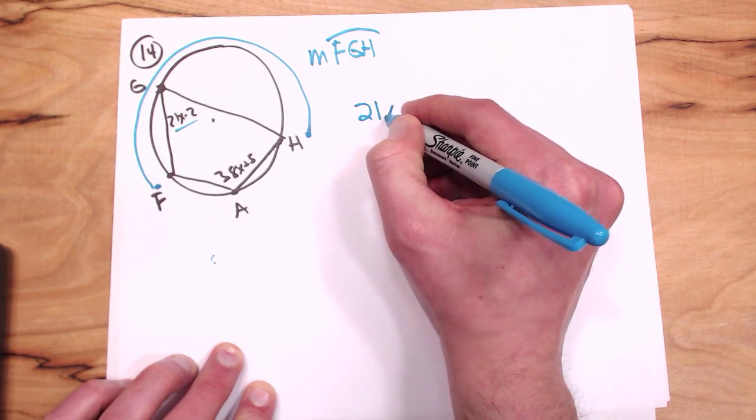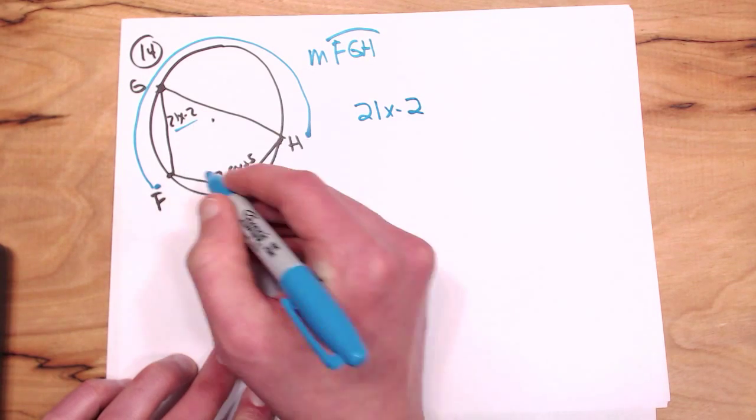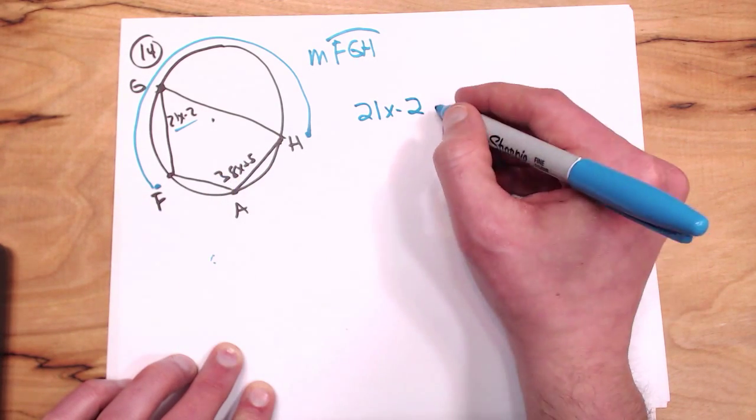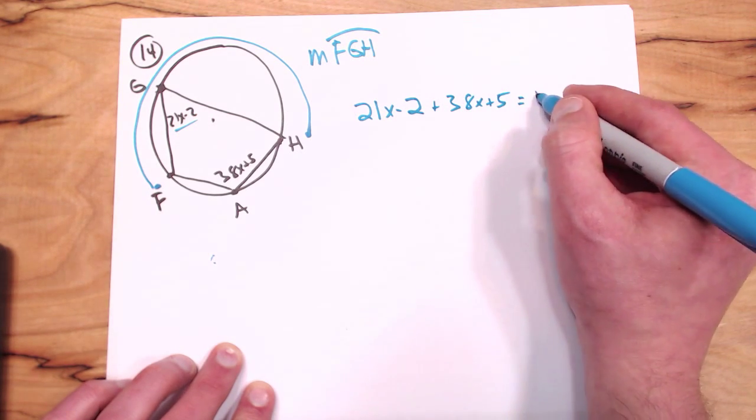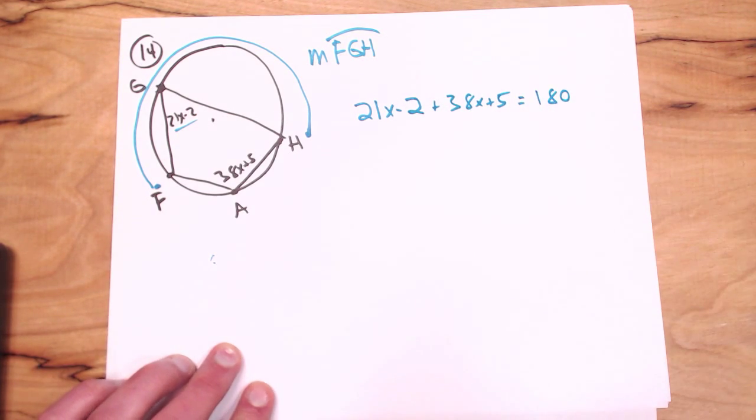So we'll say 21X minus 2, which remember that's just that angle, plus this angle, which is 38X plus 5, should equal 180.